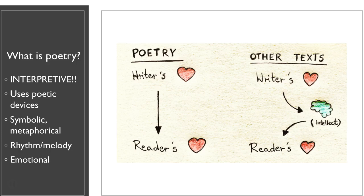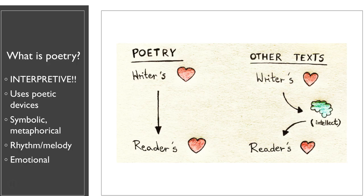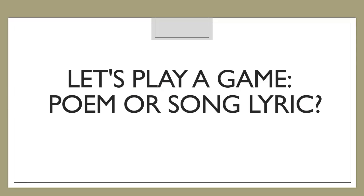Something that all poetry has in common is some sort of rhythm, also known as meter, or some sort of melody — and this is what ties poetry in with songs. Poetry also taps into emotion in some sort of way. I like this little graphic because it compares poetry to other texts. For other texts, the writer's heart goes through the reader's intellect, which comes to the reader's heart. But poetry is a direct line from a writer's heart to a reader's heart. So if you don't have an emotional reaction to a poem, that's totally fine — but for another person, they might have a very strong emotional reaction. The idea is that poetry conveys or is attached to some kind of emotion.